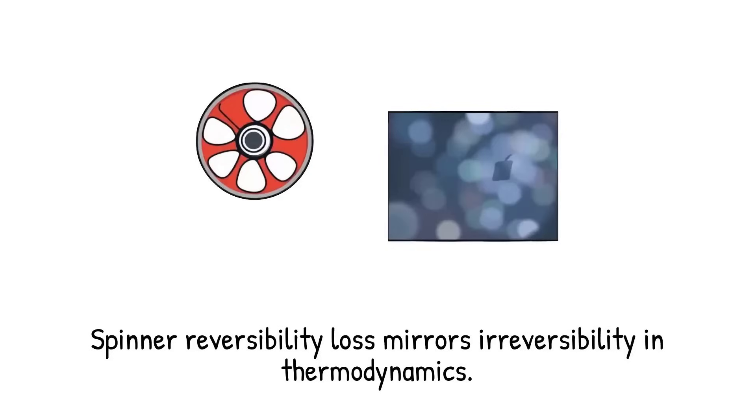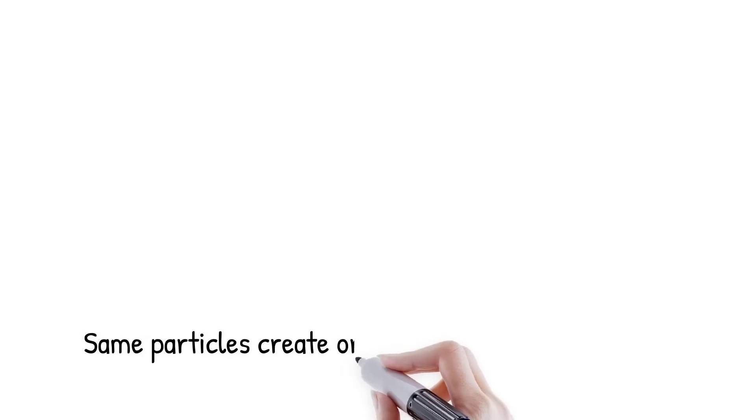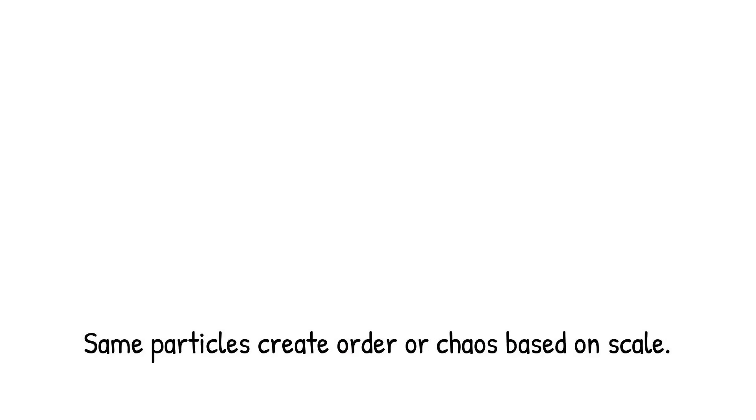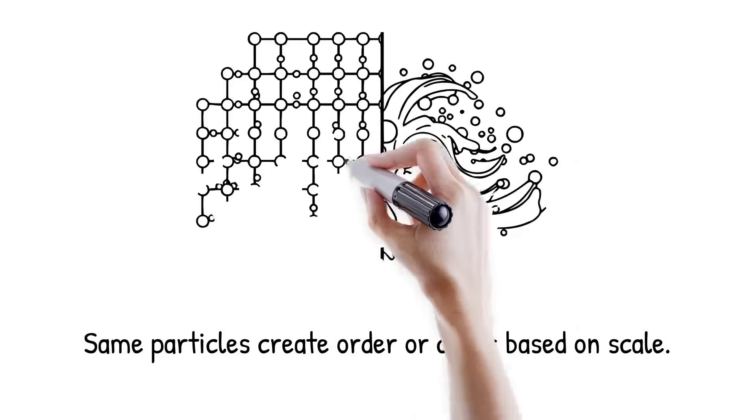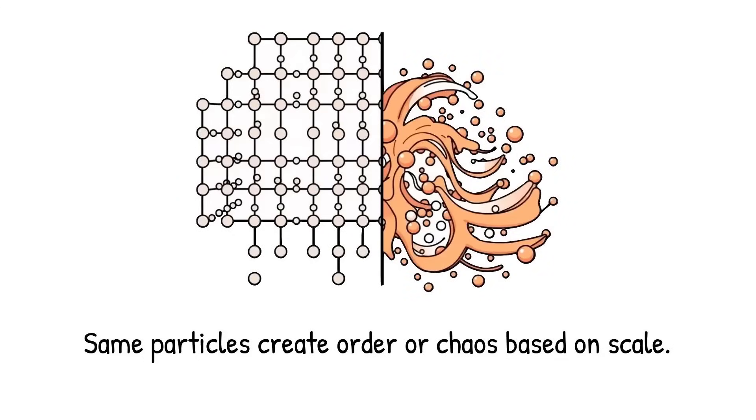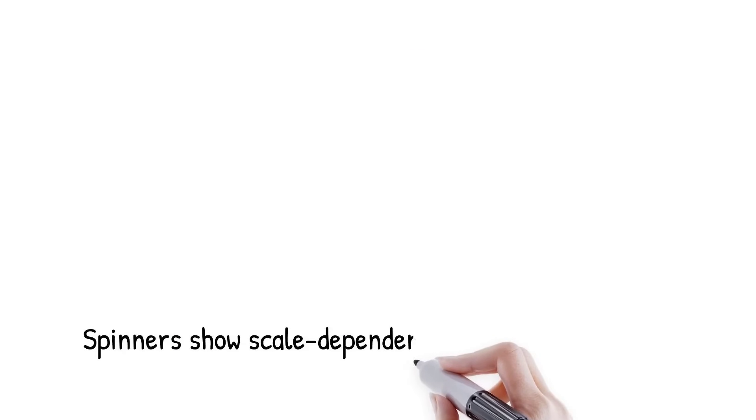The paradox is that the same particles, governed by the same physical laws, can create ordered lattices in one regime and chaotic flows in another. At small scales, reversibility ensures stability, while at larger scales, inertia destabilizes patterns into irreversibility. This demonstrates how the same system embodies two contradictory behaviors depending on scale.